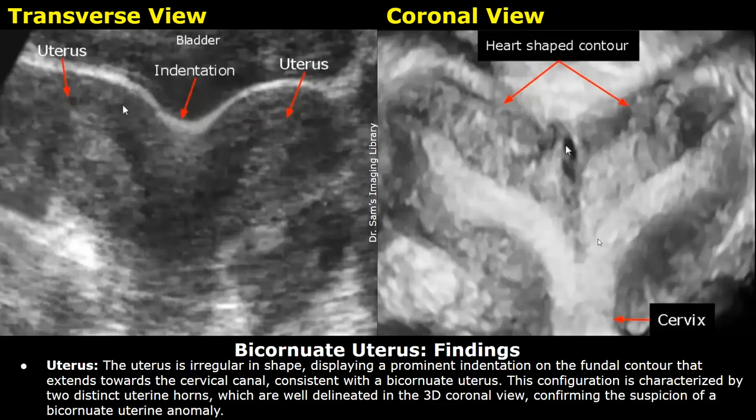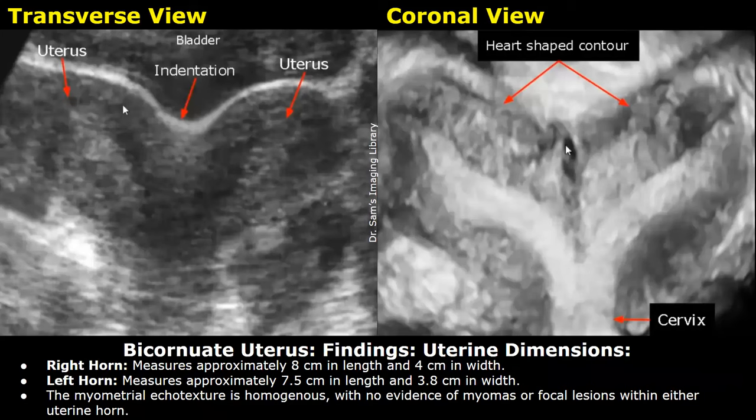Uterine dimensions: the right horn measures approximately 8 centimeters in length and 4 centimeters in width. The left horn measures approximately 7.5 centimeters in length and 3.8 centimeters in width. The myometrial echo texture is homogeneous with no evidence of myomas or focal lesions within either uterine horn.